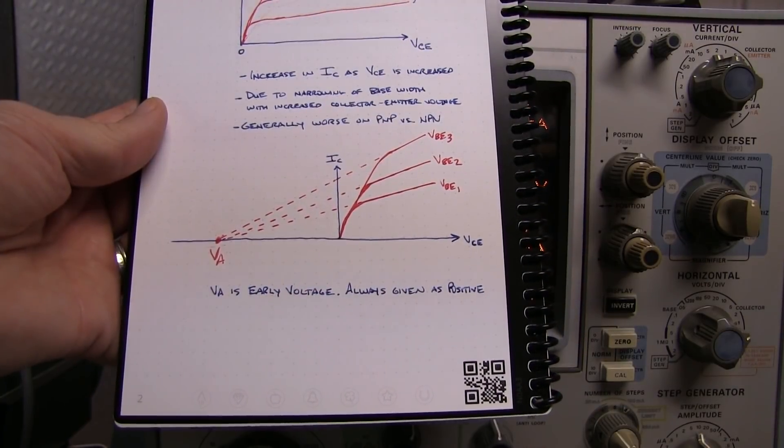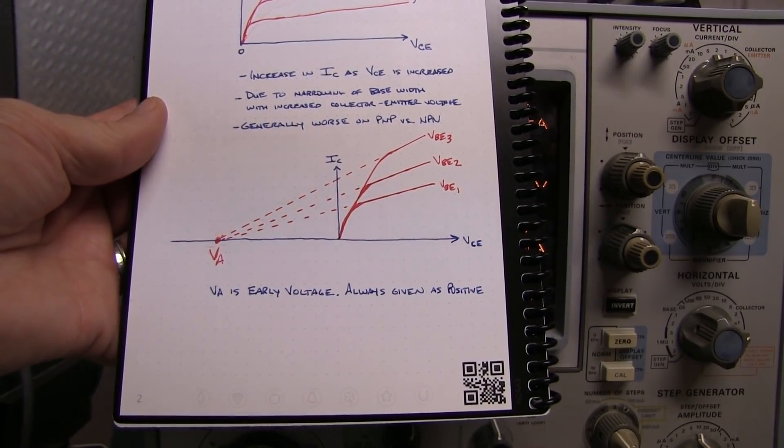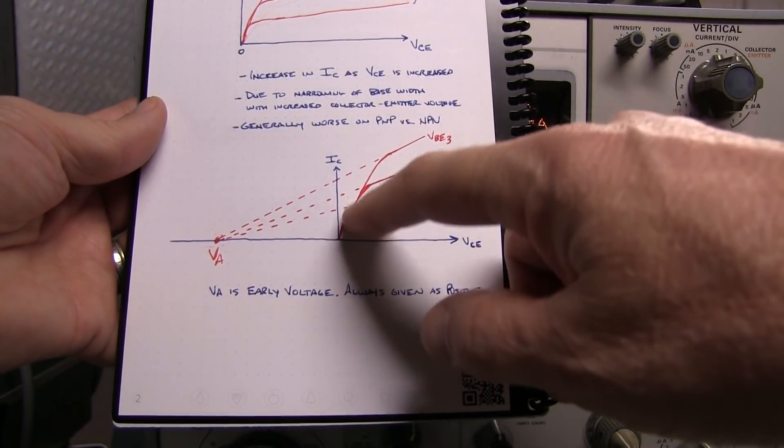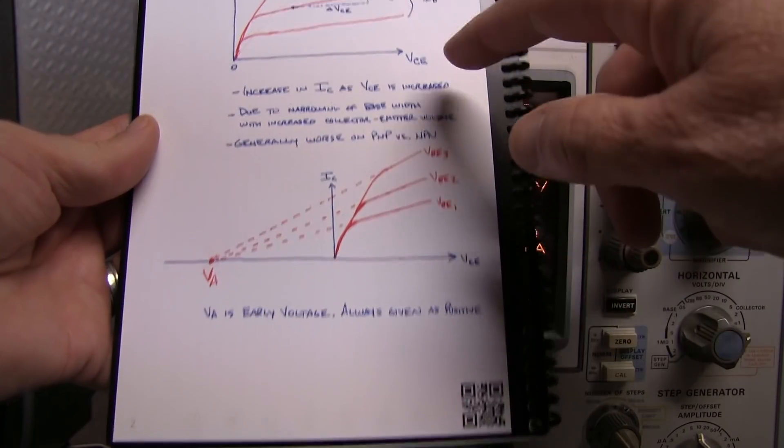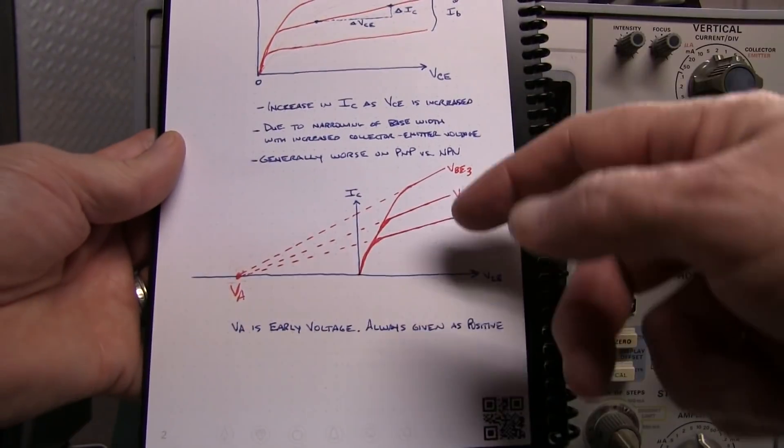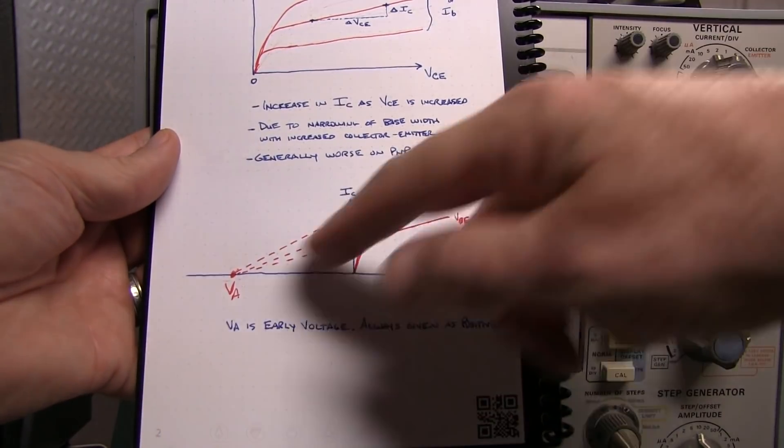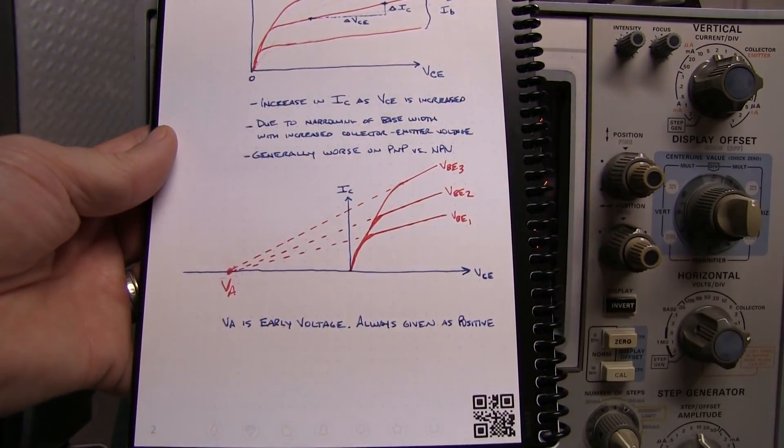The early effect is typically specified in the transistor as something called the early voltage. If the characteristic curves are plotted with a constant base emitter voltage, as opposed to a constant base current, each of those lines or curves will extrapolate out to a single point called the early voltage.